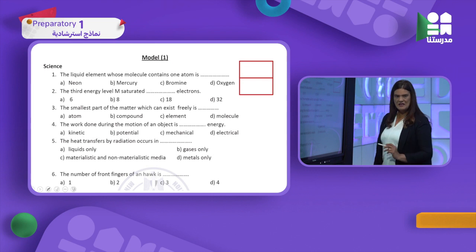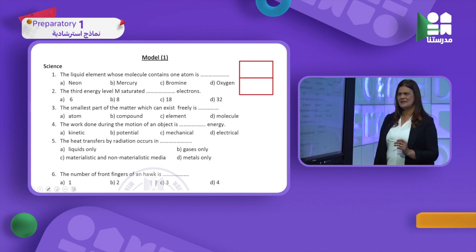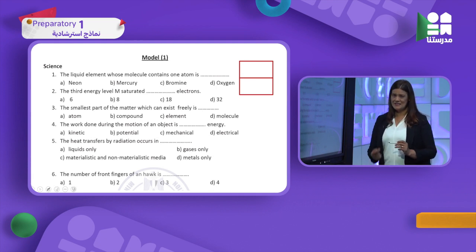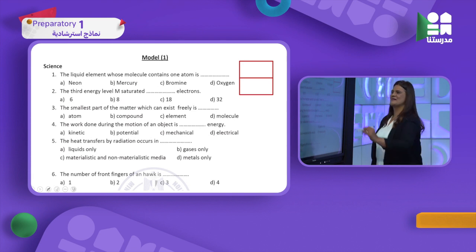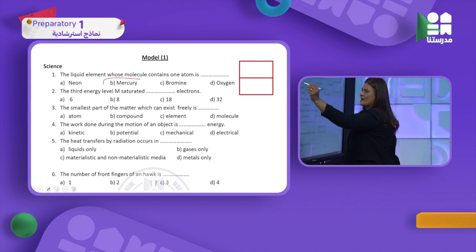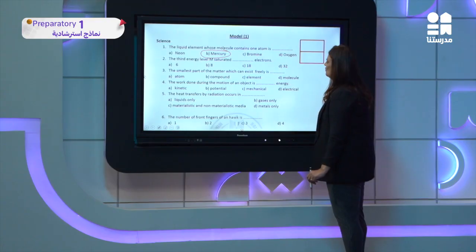Your model exam is multiple choice. The liquid element whose molecule contains one atom — I have only one liquid element that contains one atom, which is a metal: mercury. So the answer is mercury, a liquid metal which consists of one atom.